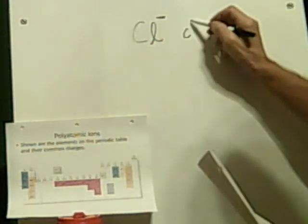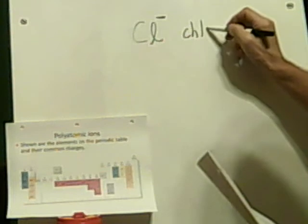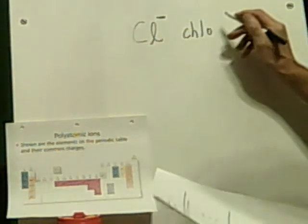The next one is chlorine, Cl minus. I'm going to say that this should be chloride. It's just one single chlorine, so the ending should be I-D-E. Chloride ion — the word 'ion' is redundant because everything we're talking about here is going to be an ion.